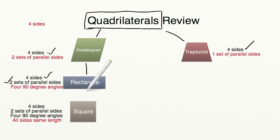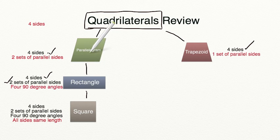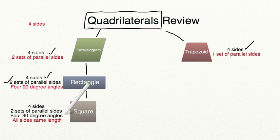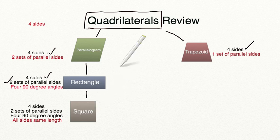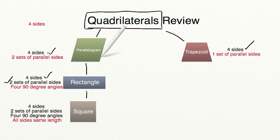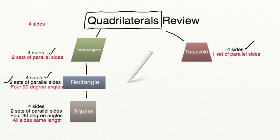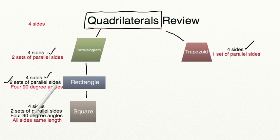We have a square. A square meets all of the same requirements that a rectangle, parallelogram, and quadrilateral have: four sides, two sets of parallel sides, four 90-degree angles, and now even more specific — all sides have to be the same length. That means a square will always be a rectangle, a square will always be a parallelogram, and a square will always be a quadrilateral. The further you go down on your hierarchy diagram, the more specific the shape is. However, a rectangle will not always be a square because a rectangle will not always have all sides the same length.